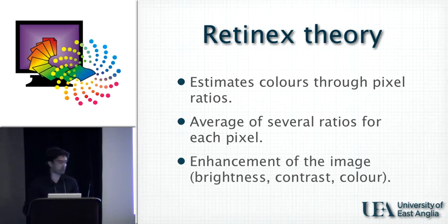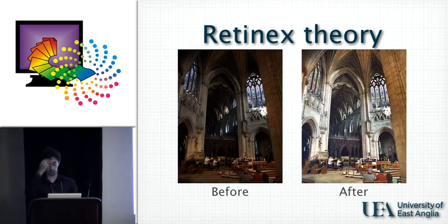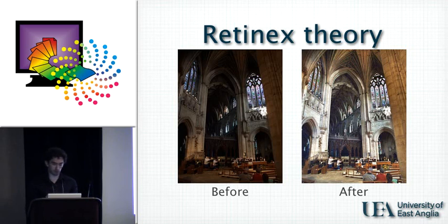Just to show you an example — I took this photo in Ely Cathedral back in England, and this is after retinex processing. I think it's quite remarkable that this algorithm, which is pretty simple, is also quite powerful. We see that there are a lot of dark areas that became visible, and at the same time the bright areas did not become overexposed.